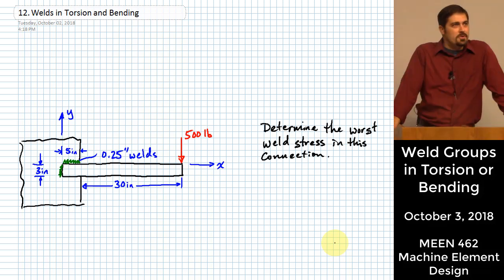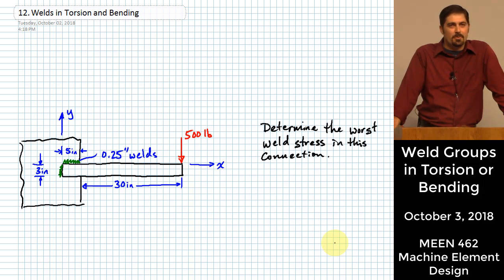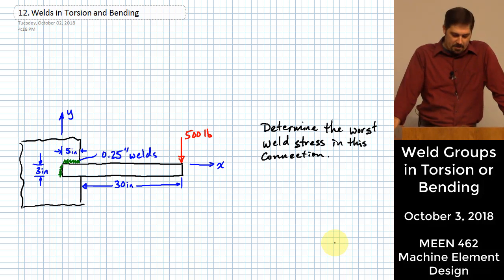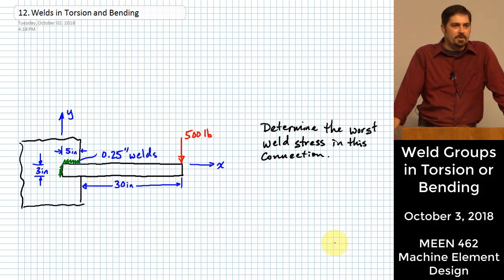Welcome. We are going to do a problem variety today — a couple of different ones. These are called either welds in bending or welds in torsion. The first example is a weld in torsion. This is probably going to look familiar because it is very similar to the analysis we did for bolt groups, and it's going to have a similar look and feel.